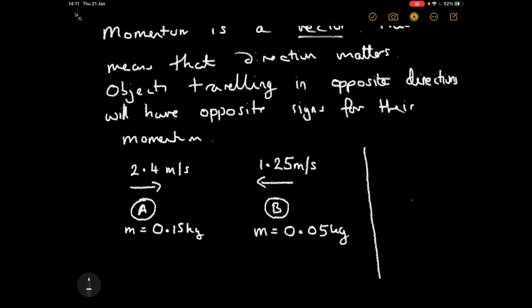Object B is moving at 1.25 metres per second. Afterwards, they stick together. We know their combined mass afterwards is 0.20 kilograms, but we don't know their velocity. Importantly, I'm going to let the maths demonstrate what's going on rather than assuming which direction they'll move.